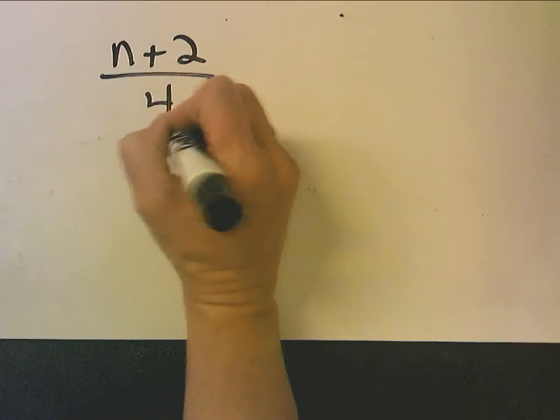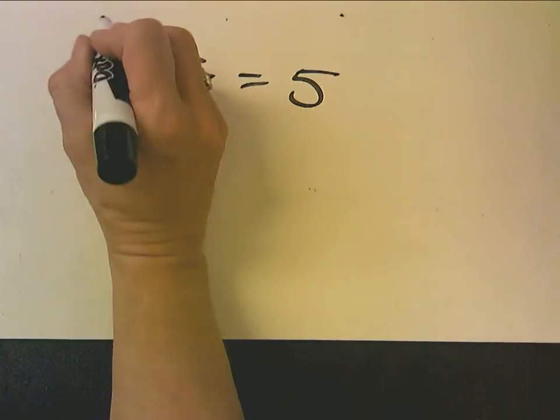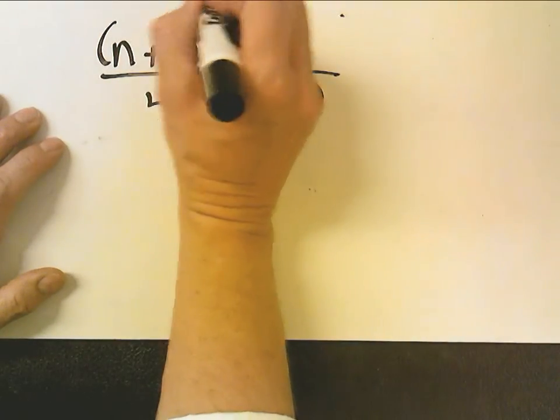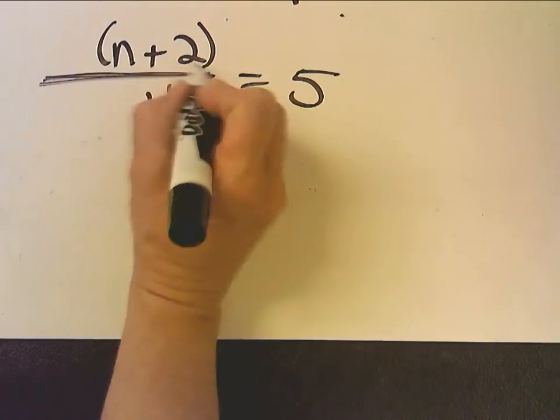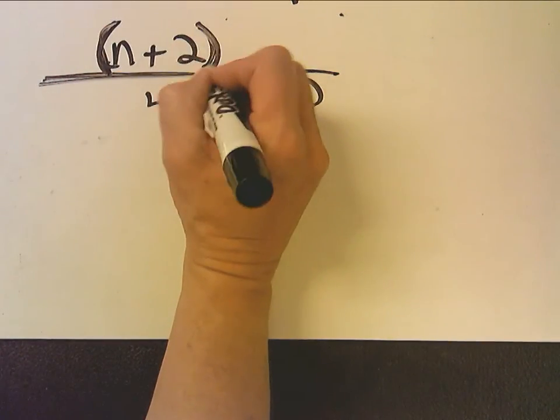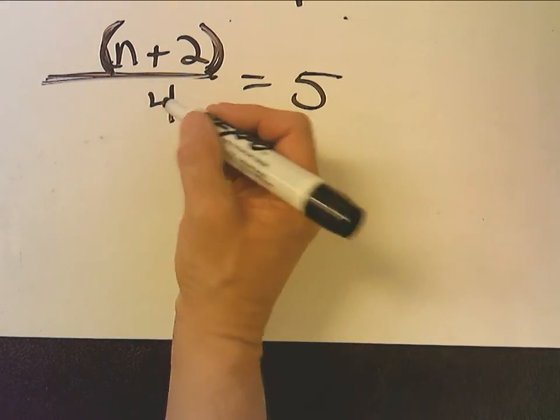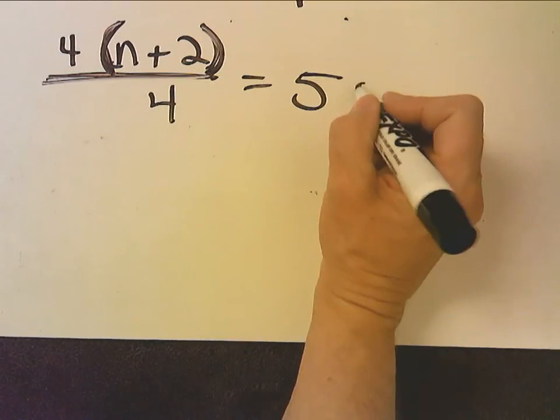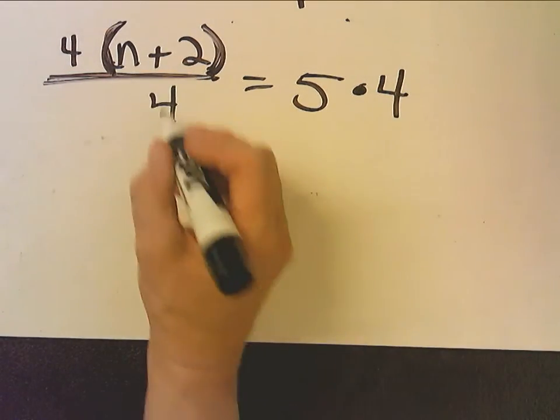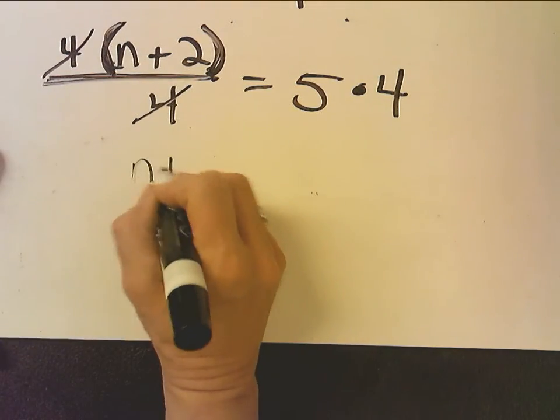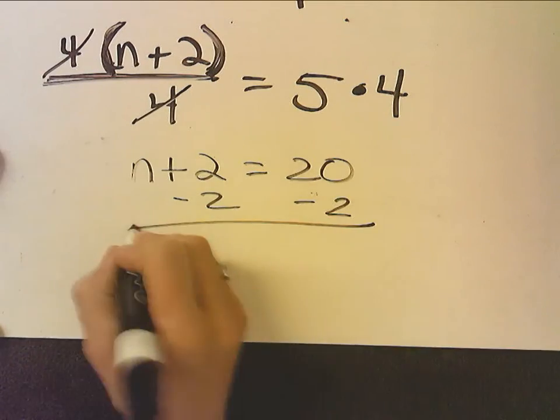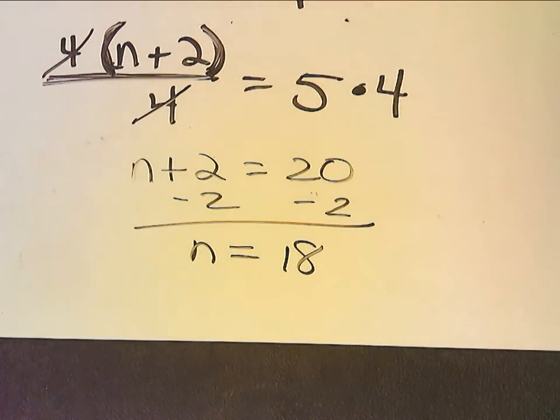Now for these last two, we have n plus 2 over 4 equals 5. So whenever you see an expression in a fraction, we put parentheses there to protect it. And if we think of SADMEP, the last thing we undo is parentheses. So that means here we think of the n being involved in parentheses and being divided by 4. So the first thing we undo is dividing by 4. We undo dividing by 4 by multiplying by 4. When we multiply by 4, these cancel out. Be careful, you don't distribute, because this 4 is just going to cancel out with this 4. We get n plus 2 equals 20, subtract 2, n equals 18.